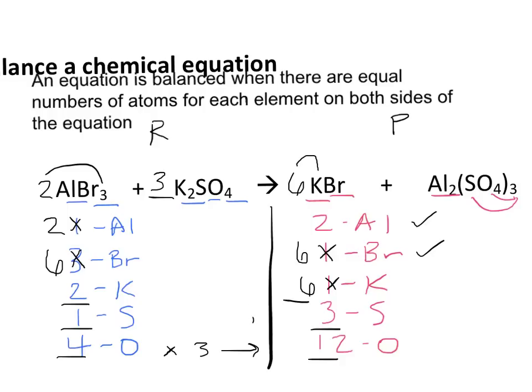When we do that, we need to update our inventory. Instead of having two Potassium atoms, we now have six. Instead of having one Sulfur atom, we now have three. And instead of having four Oxygen atoms, we now have 12.